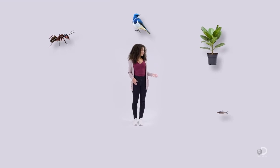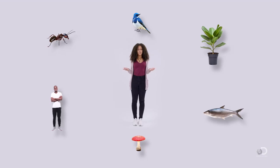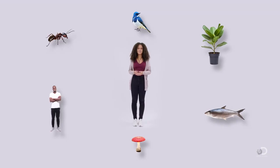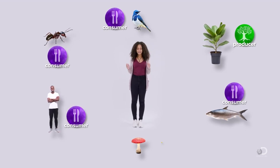Take a look at the living things around you — that ant, bird, ficus tree, fish, human, or mushroom. Which are decomposers? Which are consumers? And which are producers? Now that we've demystified it, the answer should be simple: consumer, consumer, producer, consumer, consumer, decomposer. And that's food chains demystified!